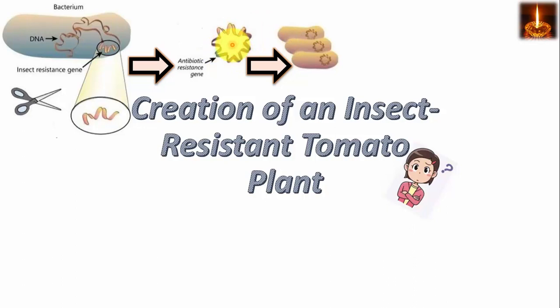Next we coat tungsten or gold particles with our DNA vector.